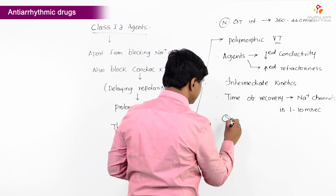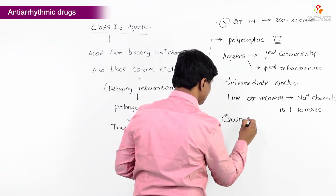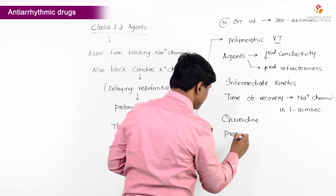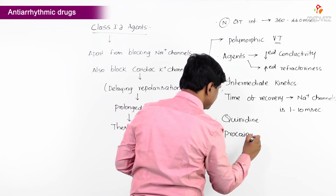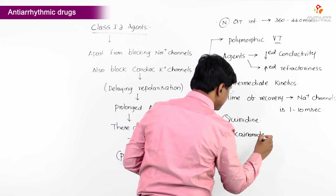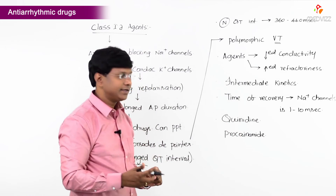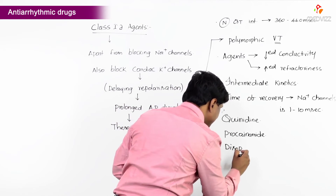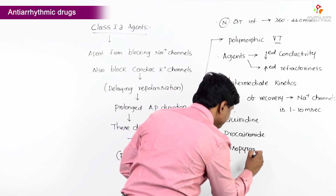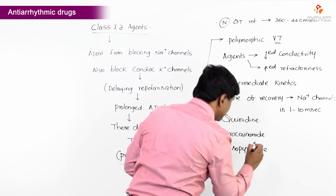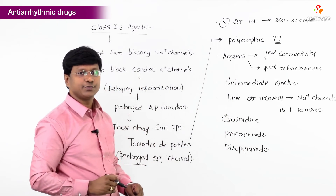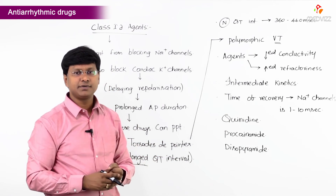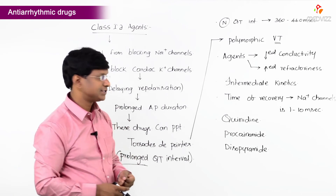The examples of Class 1A agents include quinidine, procainamide, and disopyramide. These are the important members of the Class 1A agents.